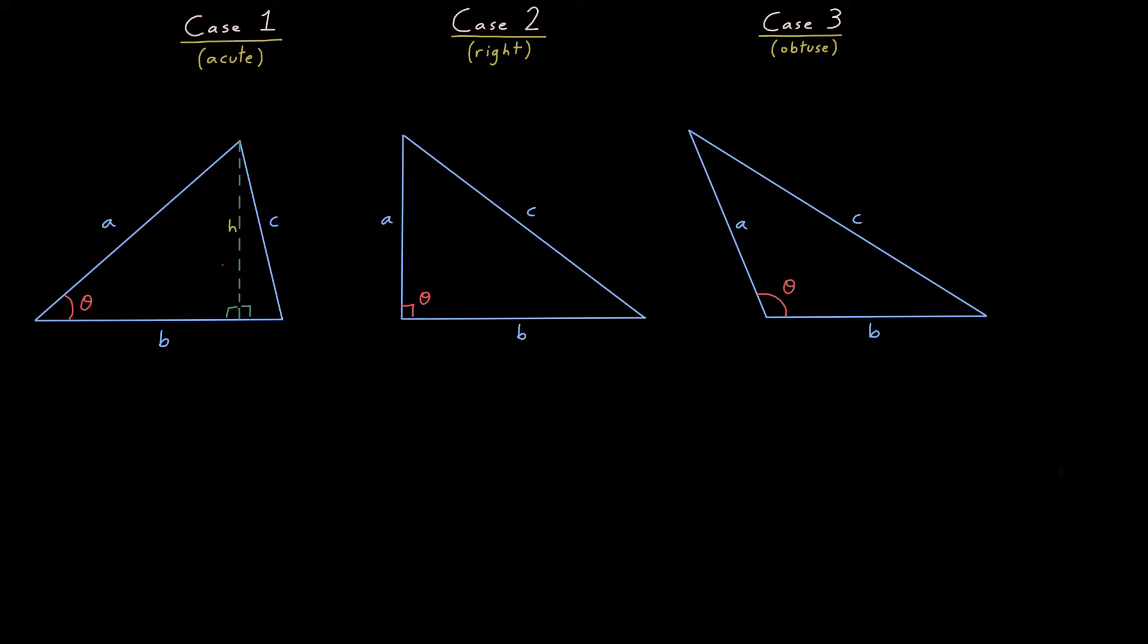Now to begin proving case one, I drop a vertical line segment straight down from that top vertex, we'll call that line segment H. Doing so creates two right triangles, very nice right triangles. That left bottom leg I'll call X, which means the right bottom leg has to be B minus X, because they got to add up to B. Now when I see right triangles, I feel like Pythagoras.